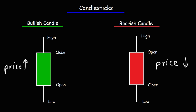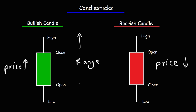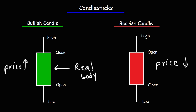Notice that for a bullish candle, the close is higher than the open because the price went up. But for a bearish candle, the open for that day is higher in price than the close. The top part of the candle represents the high of that day, and the bottom represents the lowest price for that day. The difference between those two prices represents the range for that trading day. The middle part of the candle is known as the real body of the candle. The size of the real body can help you determine if momentum is increasing or decreasing, which we'll talk about later in this video.